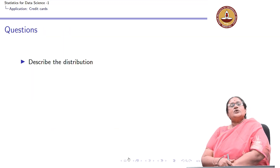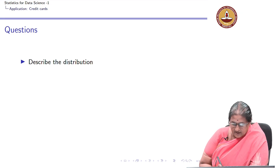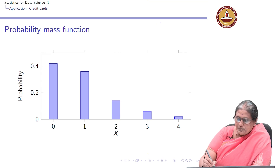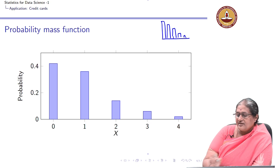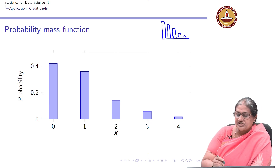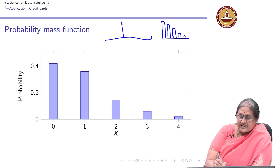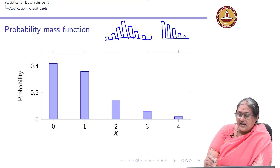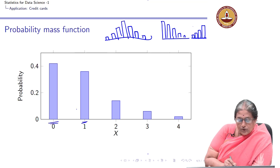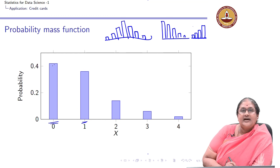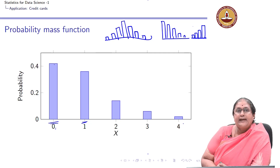Looking at this distribution, it peaks at 0 and tapers down through 1, 2, and the other values. There is a clear skew to this distribution. Recall that a symmetric distribution looks balanced, but this one is skewed — it has a peak at the lowest value and tapers downward, exhibiting right skewness with a peak at 0.